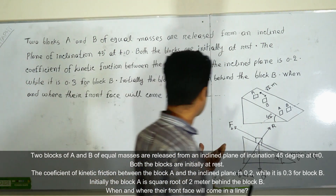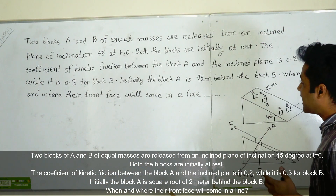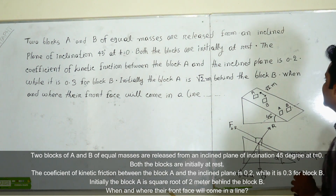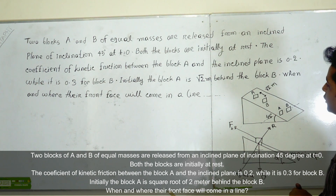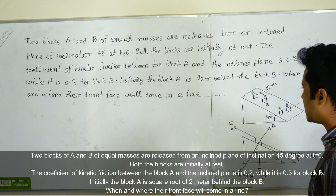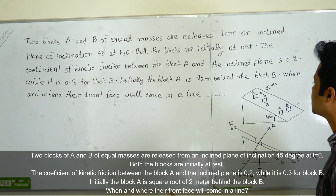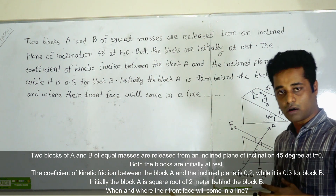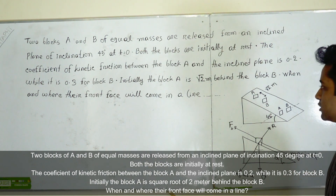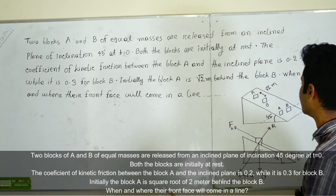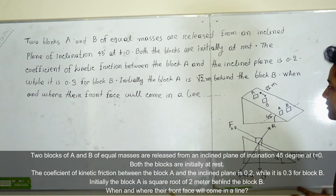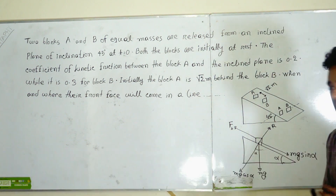Let's start the question. The two blocks A and B of equal masses are released from an inclined plane of inclination 45°. At t equal to 0, both the blocks are initially at rest. The coefficient of kinetic friction between block A and the inclined plane is 0.2, while it is 0.3 for block B. Initially, block A is √2 meters behind block B. When and where will their front faces come in line?